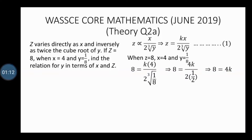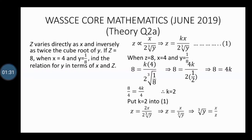To make k the subject, we divide both sides of the equation by the coefficient of k, which is 4. So dividing by 4, k equals 2, which is our constant. We now substitute k back into equation 1, which gives us z equals 2 multiplied by x over 2 times the cube root of y. The 2s cancel out.